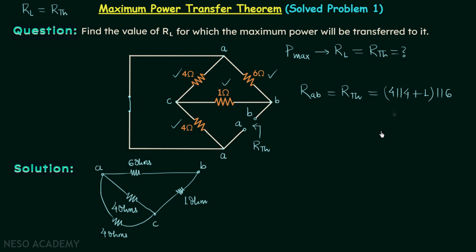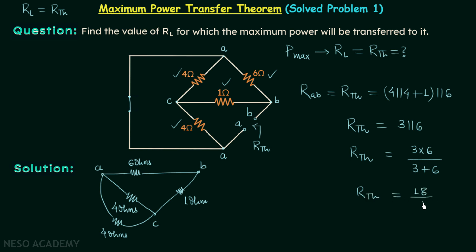4 in parallel with 4 gives us 2. 2 plus 1 is 3. So we have 3 in parallel with 6. RTH is equal to 3 multiplied by 6 divided by 3 plus 6, which is 18 divided by 9. So RTH equals 2 ohms. Therefore, for maximum power transfer, RL should be equal to RTH, which is 2 ohms. This is our answer.